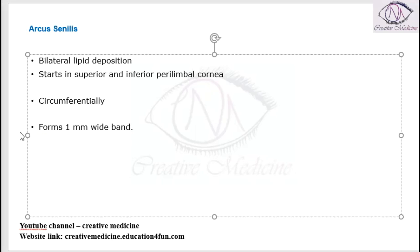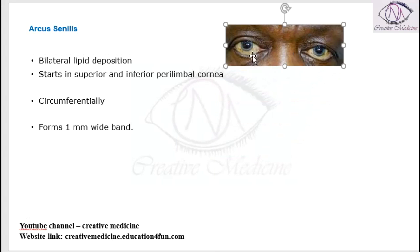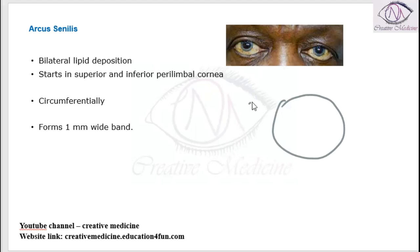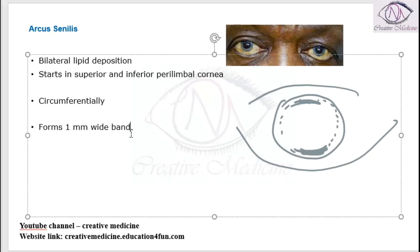This is the eye picture showing Arcus senilis. If this is the cornea, they start from the superior area, then the inferior perilimbal cornea, and slowly move circumferentially to form a 1 mm wide band called Arcus senilis.